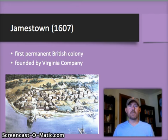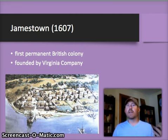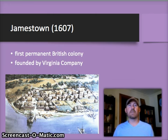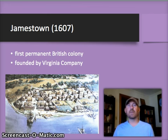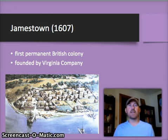Now we roll to the first successful English colony, which is Jamestown, founded in 1607 through the efforts of the Virginia Company. Jamestown was not really the ideal location to found a colony because of the climate, the geography, the brackish water, and just the general unhealthy conditions of that place. As we go forward in the next couple of slides, we'll be talking about the difficulties that these settlers faced due to these conditions.